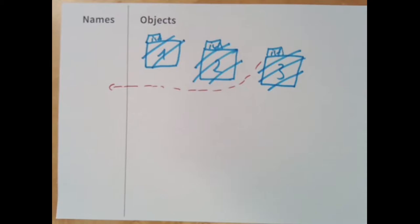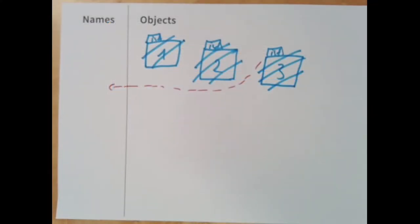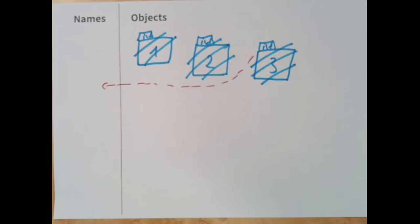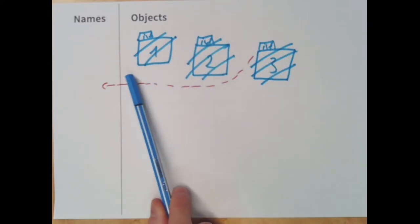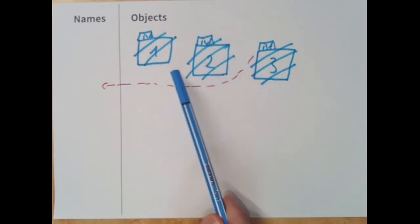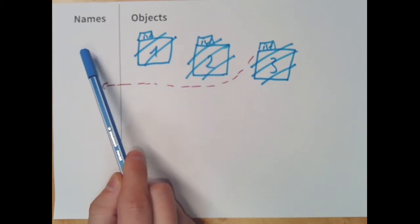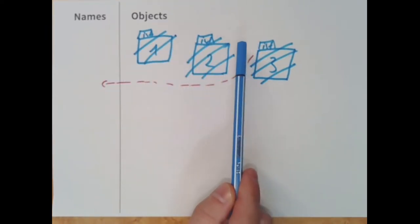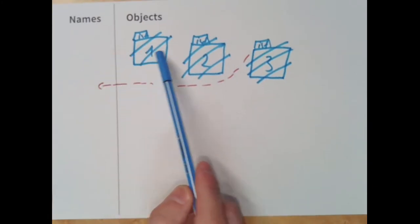After the code cell has been executed, there are no permanent side effects. By looking into the memory, there is no way to see if the object was actually there, because on the left-hand side we don't have a name referencing any of these objects. So we couldn't even tell if the objects ever existed.